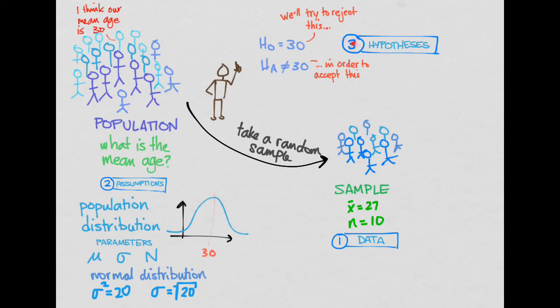Now, step three is to form our hypotheses, and we already talked about those. We're going to say our null hypothesis is that we agree with this guy who says that the mean age is 30, and our alternative hypothesis is that it is not 30, and we're going to try and prove that person wrong.